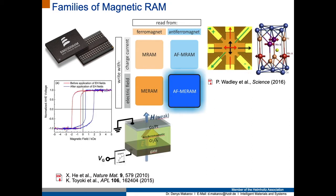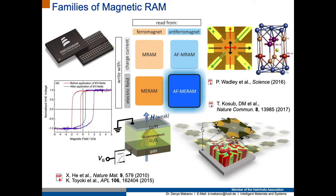Our work is inspired by the activities of the group of Christian Binek on the realization of magneto-electric random access memory, where the magneto-electric insulating antiferromagnet, chromium oxide, is interfaced with a ferromagnet, and the magnetic state of the ferromagnet can be manipulated by the electric field applied across the antiferromagnetic insulating material. In our work, we removed the ferromagnet from the stack and ended up with antiferromagnetic magneto-electric random access memory, where the memory cell contains only chromium oxide as a magneto-electric insulator, interfaced with a platinum readout electrode to access the magnetic state of the antiferromagnet.